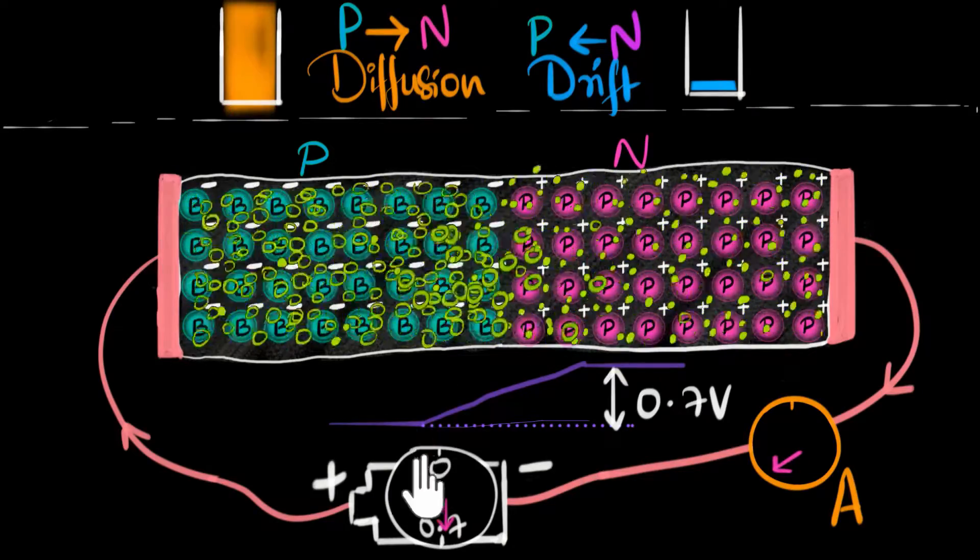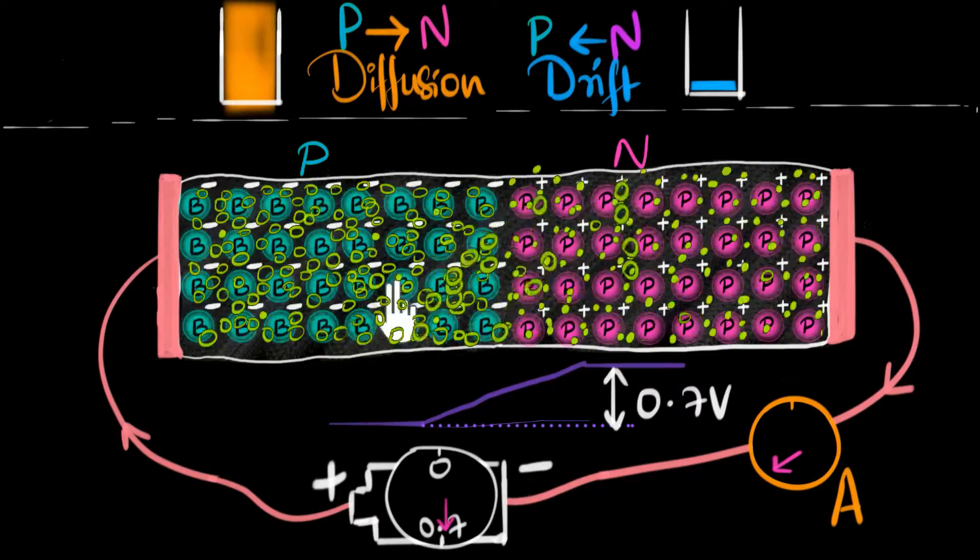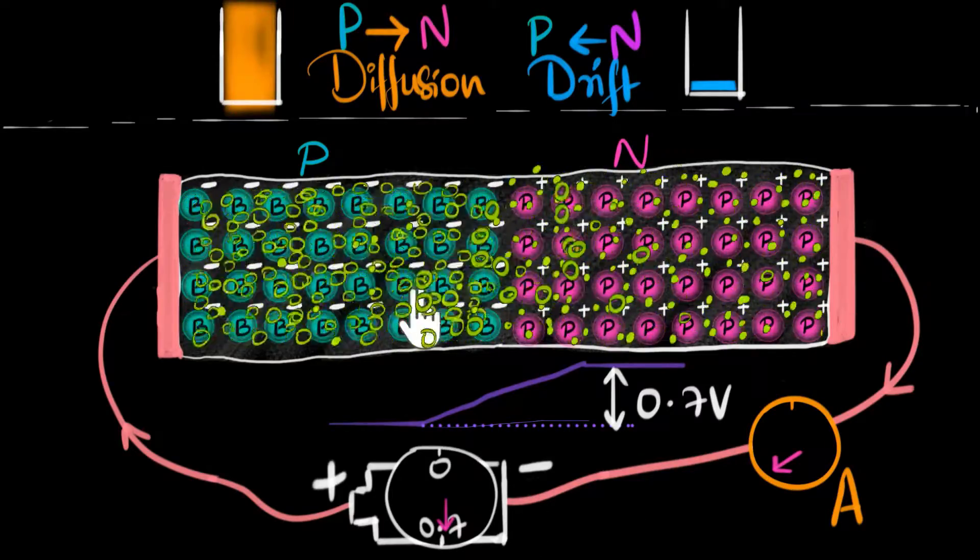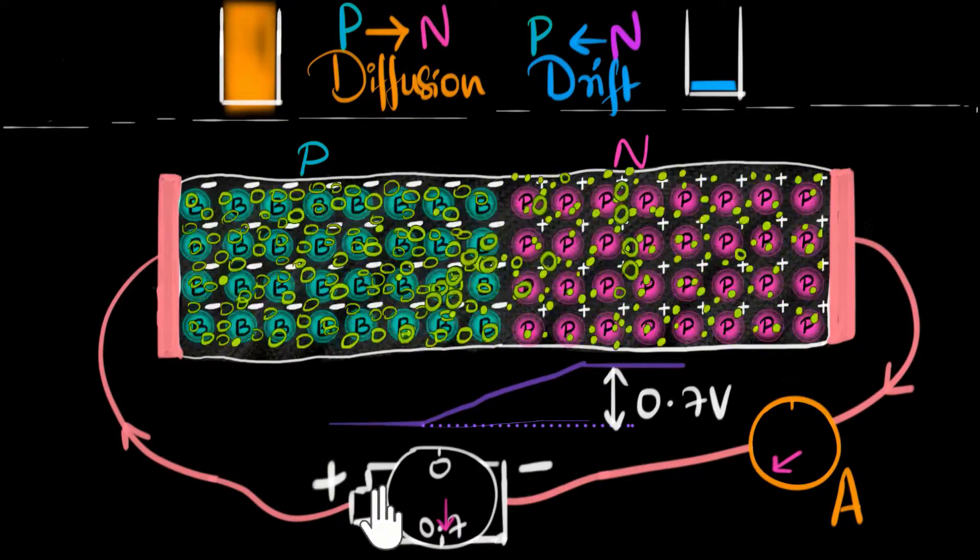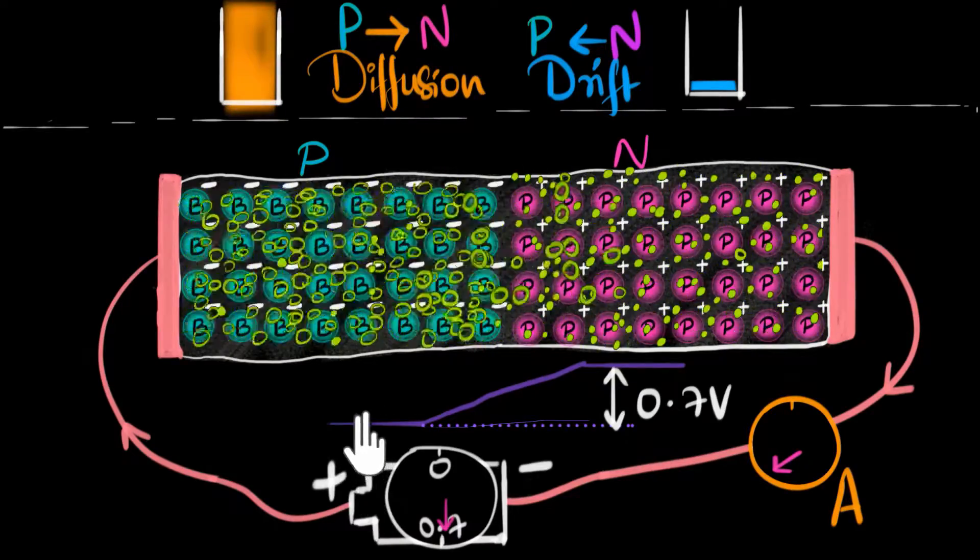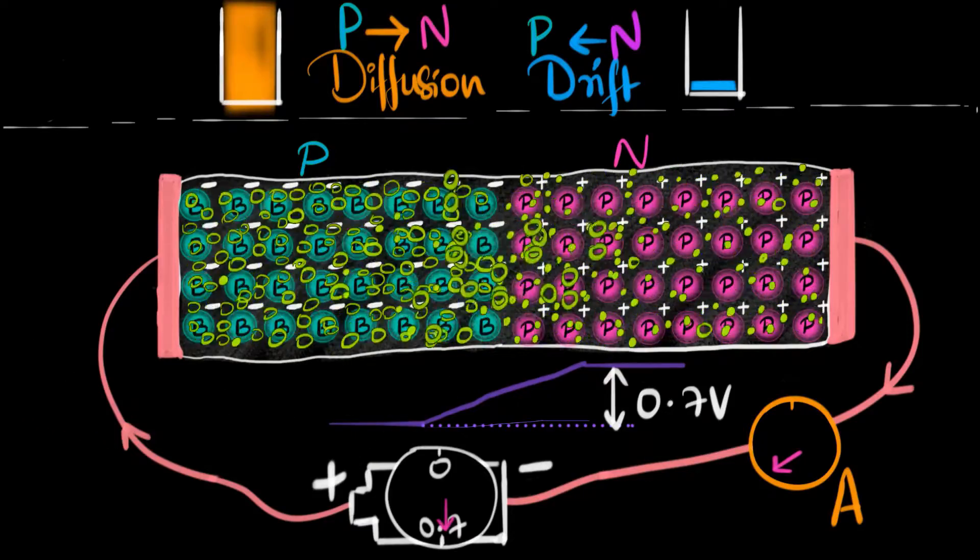When you connect a P-N junction this way, P-type to the positive terminal, N-type to the negative, the diode starts conducting. It allows the flow of charges. This connection is called forward biasing. The word biasing just means connecting a battery. So in the forward bias mode, the P-N junction conducts quite heavily.